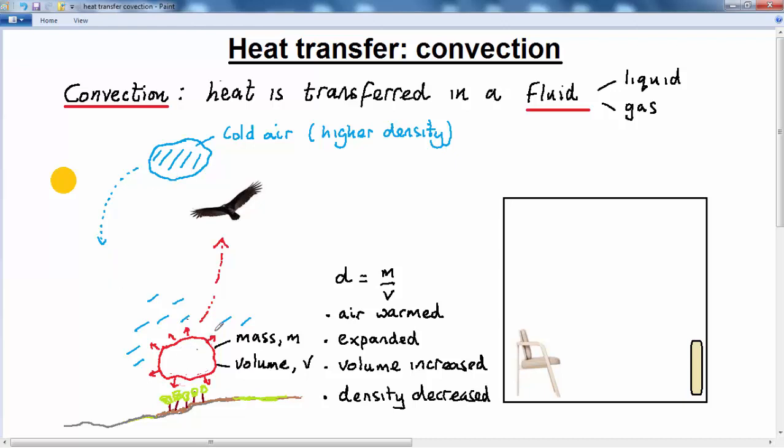Cold air sinks through the warmer air below it, warm air rises through the colder air above it. Now there are a number of birds that make use of this mechanism, this convection mechanism.